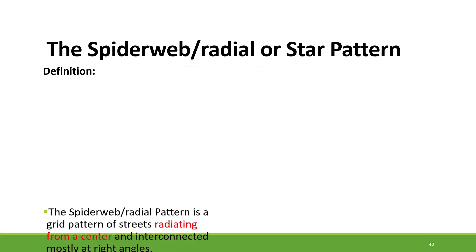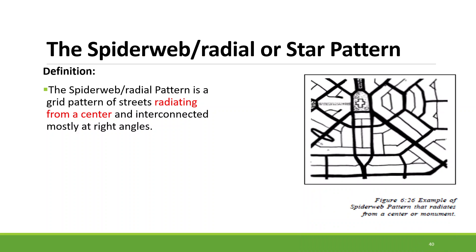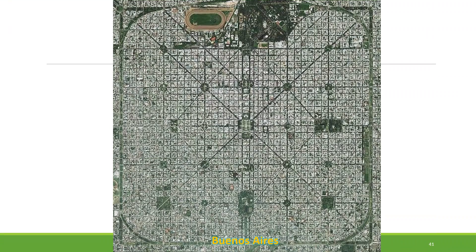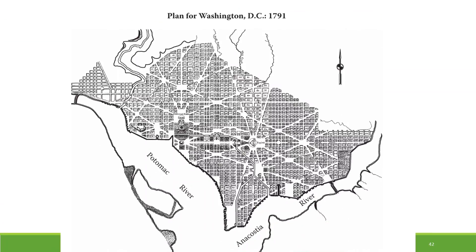Another is the spider web or radial pattern, which radiates from the center of the city and is geometrically focused from the center. This is Buenos Aires, Argentina, where you can observe a spider web layout. Paris also has a spider web background. Washington DC, planned in 1791, also has this spider web pattern radiating from the center — from the White House, you can say.